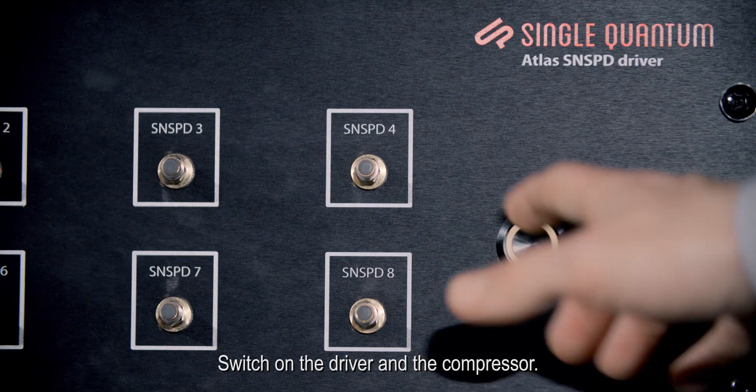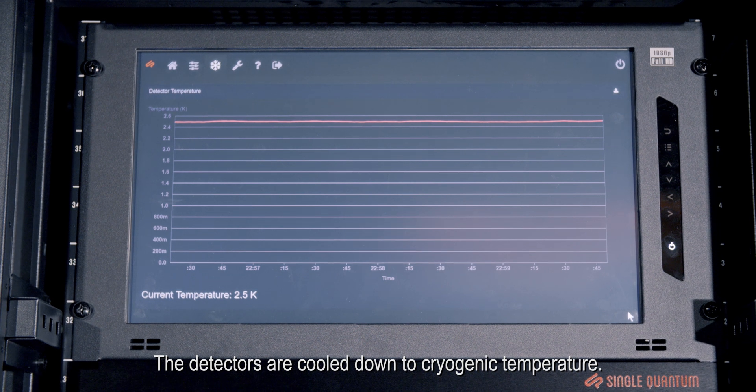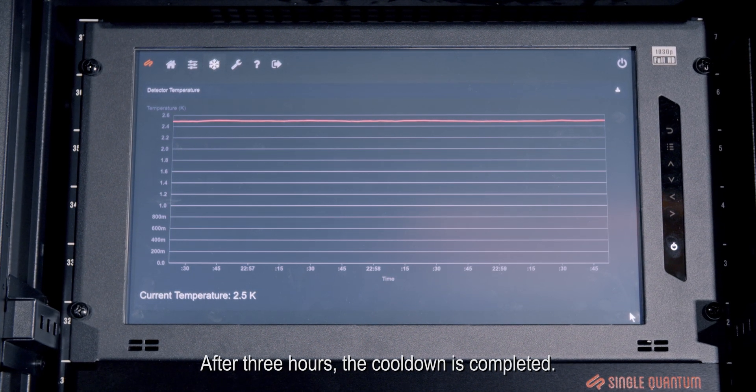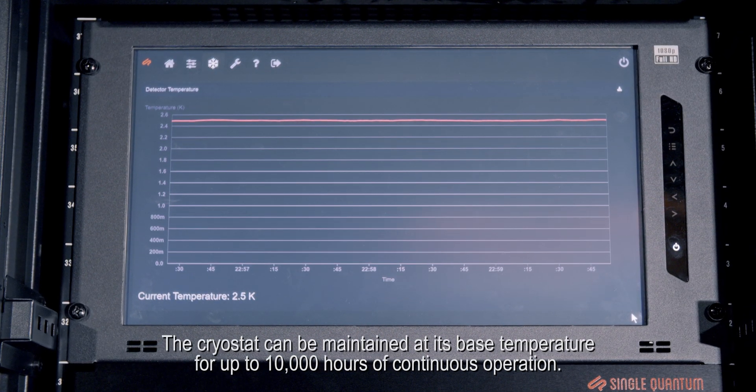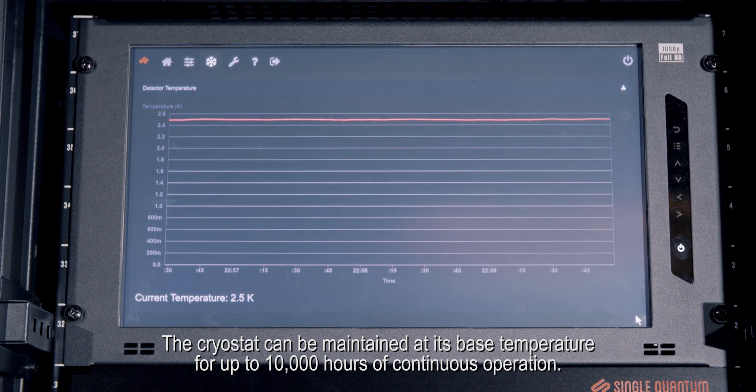Switch on the driver and the compressor. The detectors are cooled down to cryogenic temperature. After three hours, the cool-down is completed. The cryostat can be maintained at its base temperature for up to 10,000 hours of continuous operation.